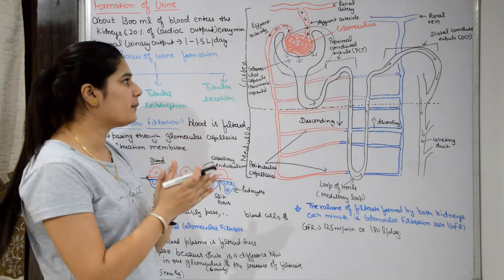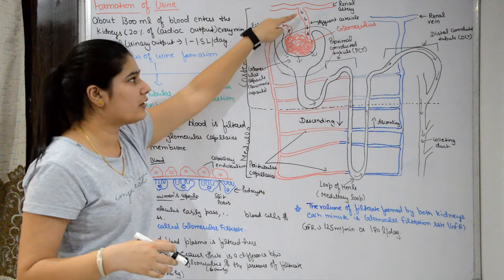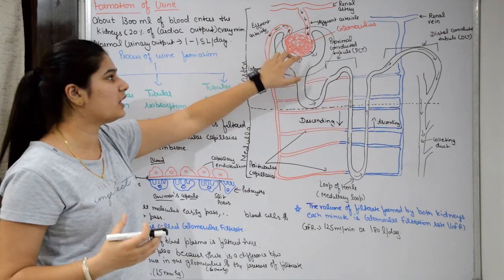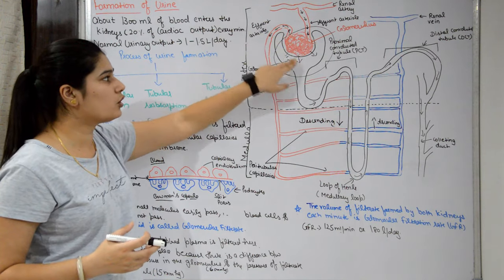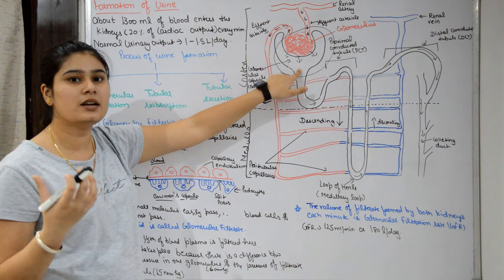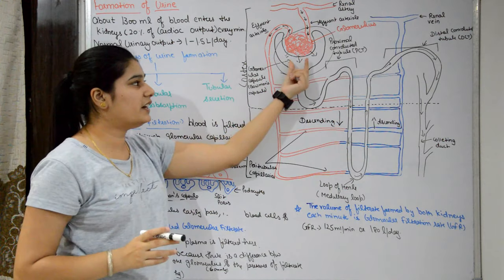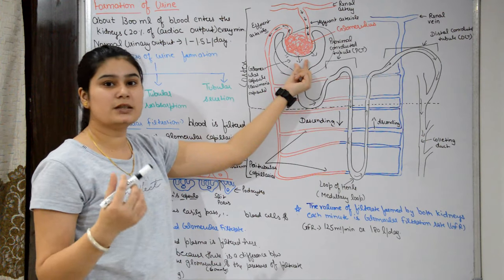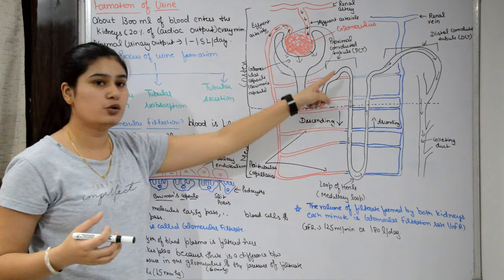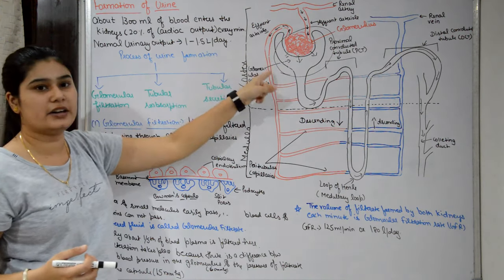The first step is glomerular filtration. Blood is brought to the nephron through afferent arterioles, which form the glomerulus. In the glomerulus and glomerular capsule, blood plasma is filtered. The filtrate — which contains waste material — passes into the tubules, while the cleaned blood exits through the efferent arteriole.